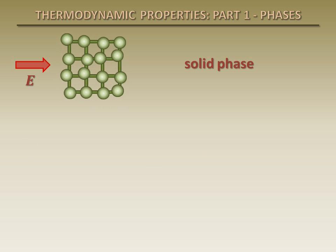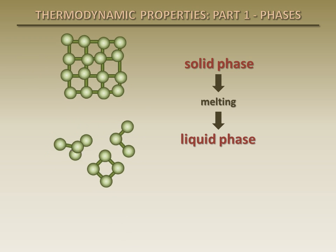At sufficiently high temperatures, the energy of the molecules may reach a point where the intermolecular forces are partially overcome and groups of molecules break away. This is the beginning of the melting process. In the liquid phase, molecules can rotate and translate freely.